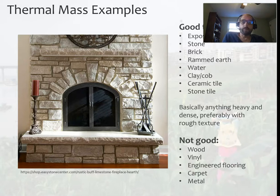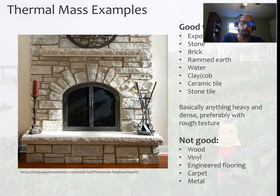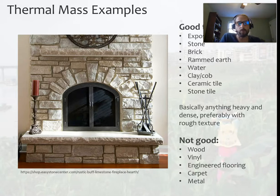Good thermal mass materials are things that are really heavy and dense, particularly with a rough texture that gives more surface area to absorb the sun. Examples include exposed concrete, stone, brick, rammed earth, ceramic tile, stone tile, water, and clay cob — a lot of natural materials. Materials that are not good thermal masses include wood, vinyl, engineered flooring, carpet, and metal. Those all heat up pretty quickly and then cool down quickly, whereas good thermal mass materials take a while to heat up.